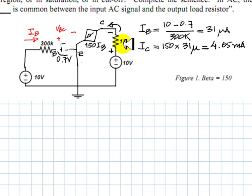and that voltage will be 1k times 4.65mA, which is 4.65 volts.